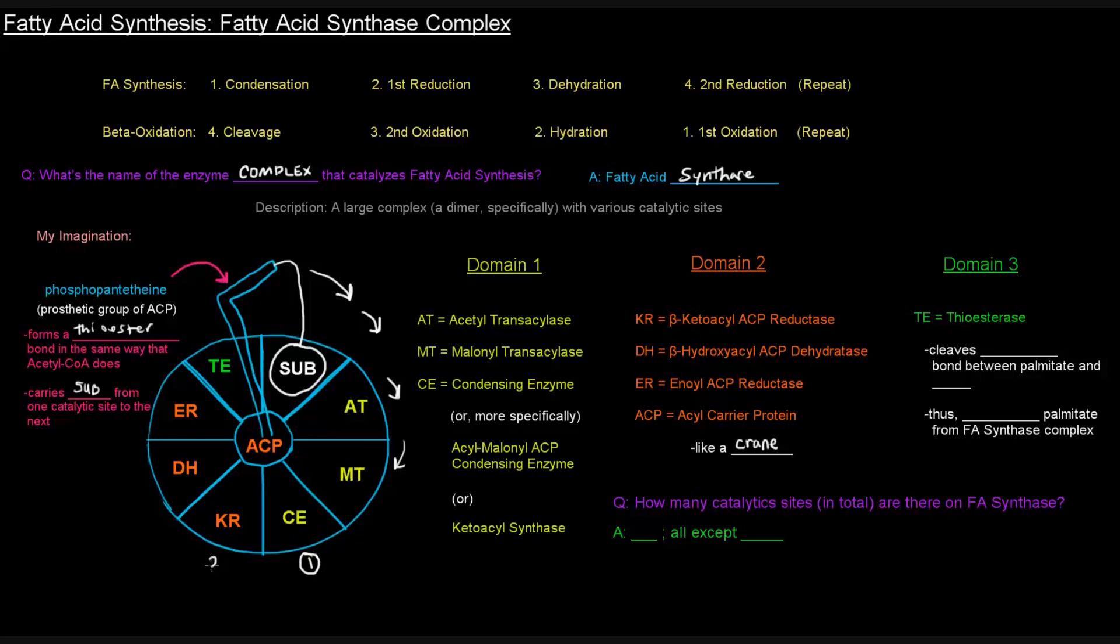The first reduction with this ketoacyl-ACP reductase, and then the dehydratase, right? The dehydration occurs there, and then the second reduction occurs at the ER, with the enoyl-ACP reductase site. So those four sites are going to be continually active when we keep adding those two carbon units.